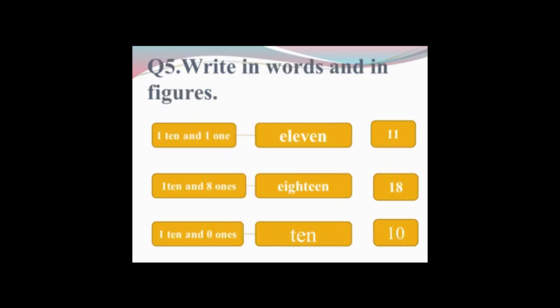Read question number 5. Question 5 is: write in words and in figures. In words means you write the spellings; in figures means you write the number. First question is 1 ten and 1 one. The first digit is 1 and the second digit is 1 — that's 11. The spelling is E-L-E-V-E-N — 11.